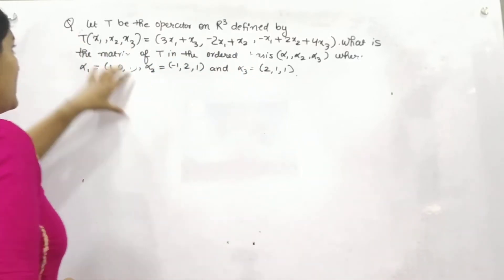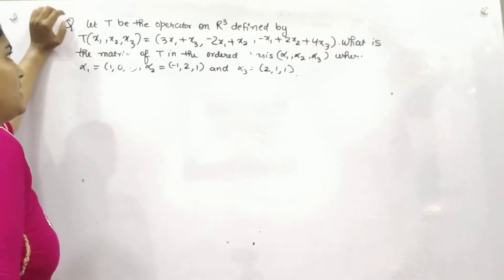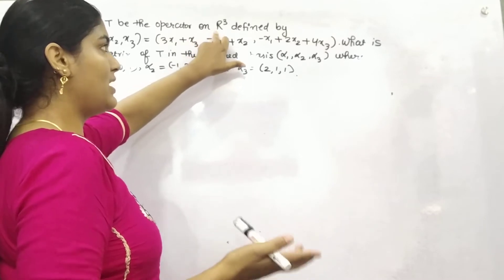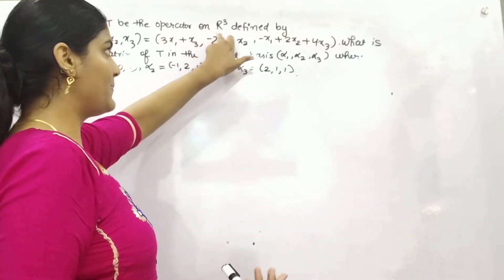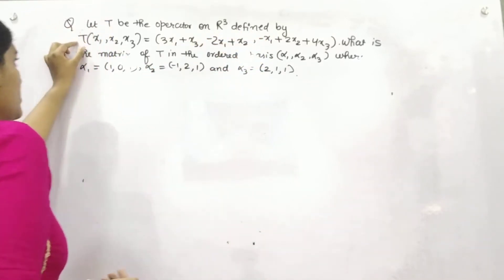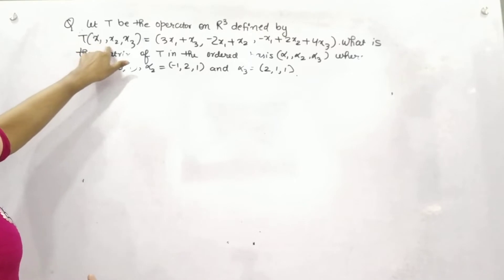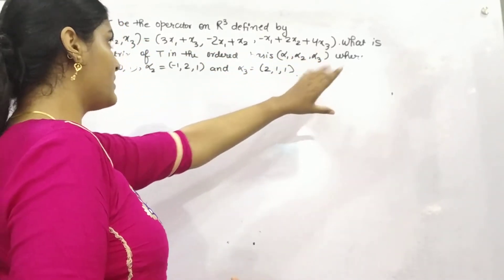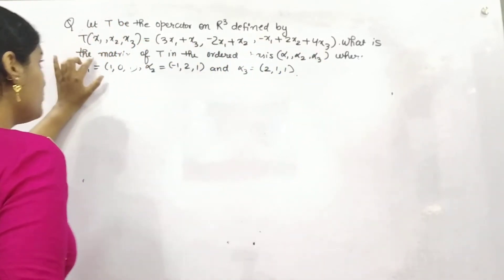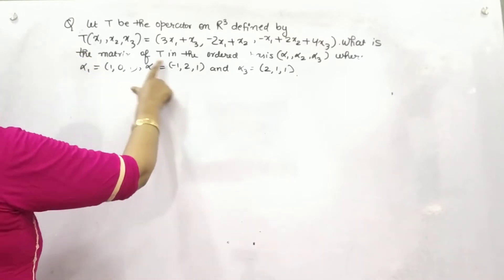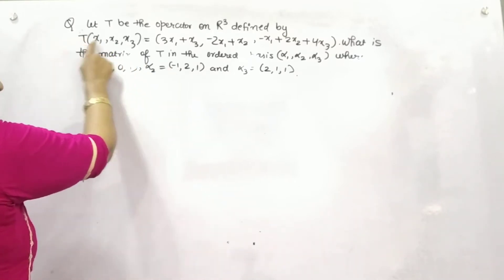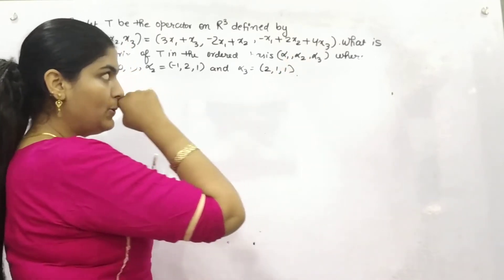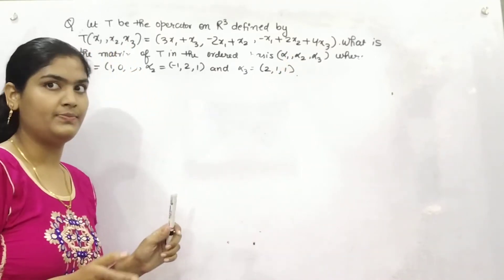There is a question: let T be the operator on a 3-dimensional vector space defined by x1, x2, x3. You need to find out the matrix of T whose ordered bases are in the form of α1, α2, and α3.